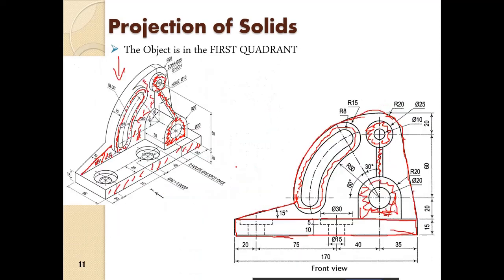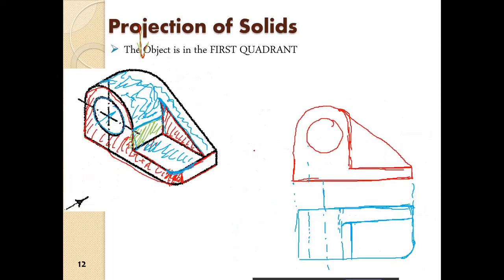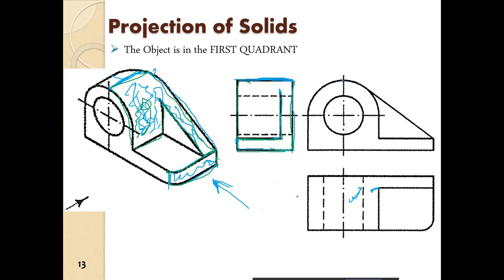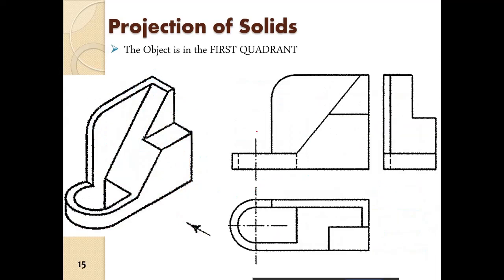We tried to develop the front view of different objects — some complicated objects as well as some simple geometrical objects. So this is the front view, and when we see from the top we see the top view. Basically in an exam the isometric view will be given and from there you have to develop the orthographic projections. It may be the other way around also — the orthographic projections will be given and from there you have to draw the isometric view, which we will cover in a later part.